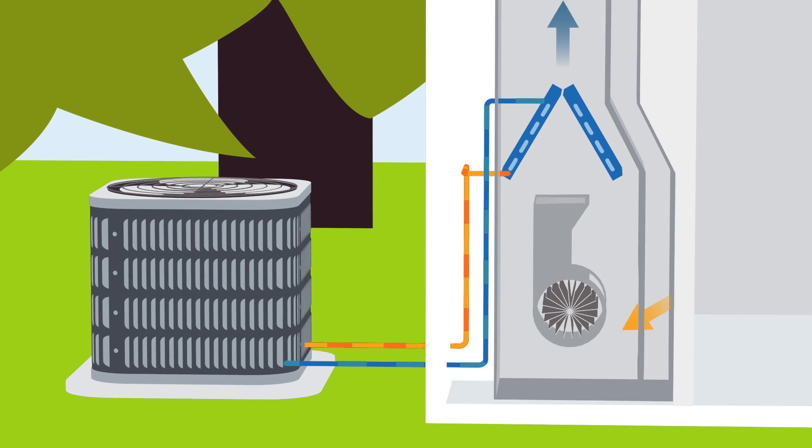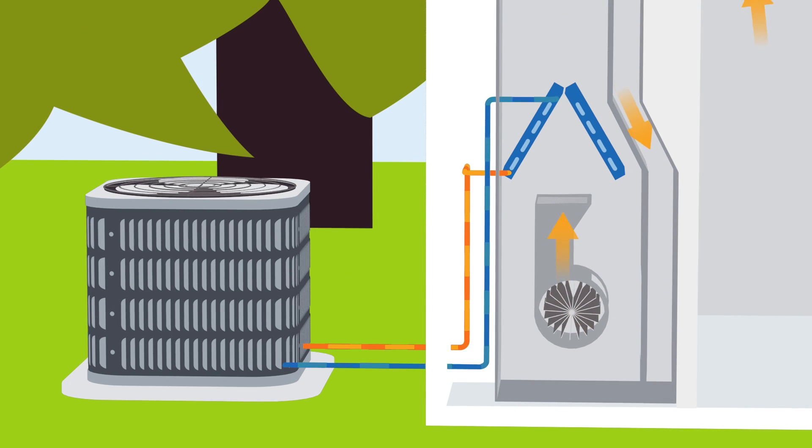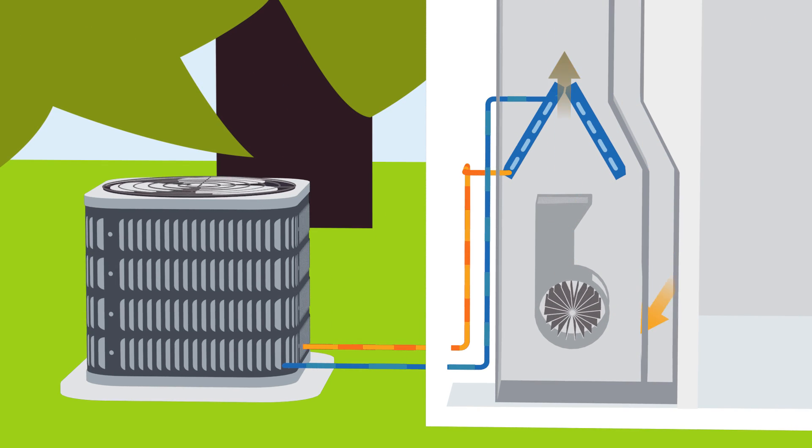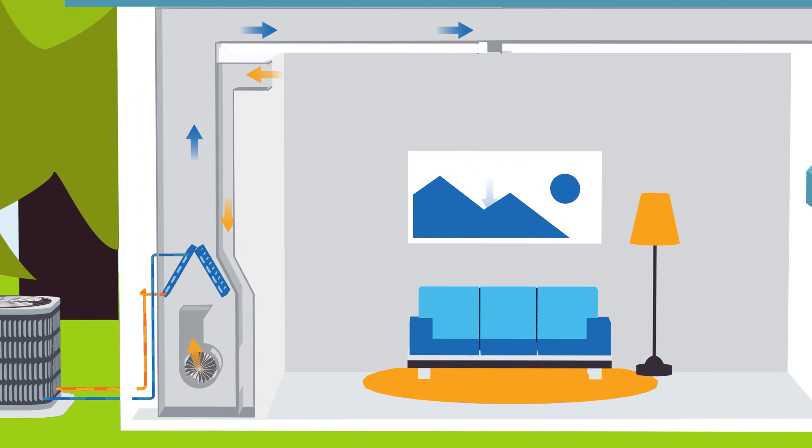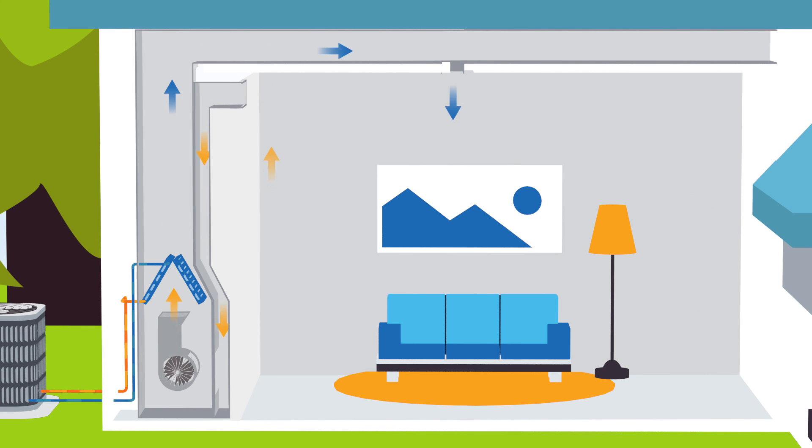A central air conditioning system has two sides to its operation, the indoor side and the outdoor side. Inside your house, warm air is cooled by cold refrigerant.